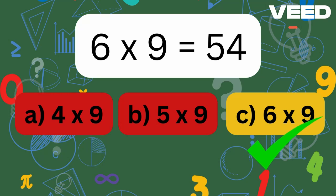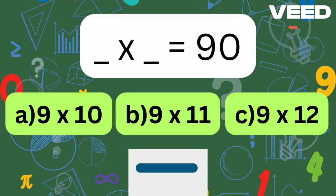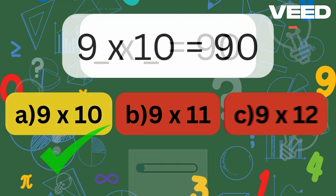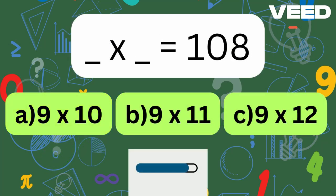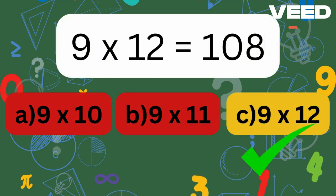What times what equals 108? 9 times 12 is equal to 108.